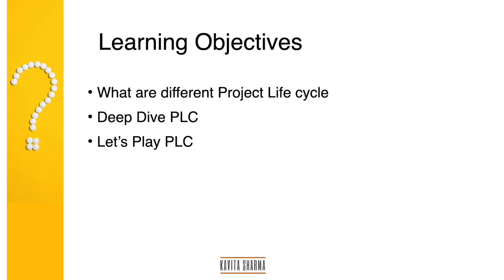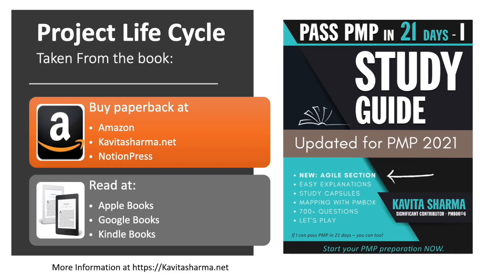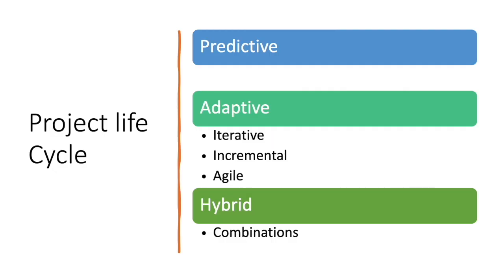All these topics are picked up from the book called PMP Study Guide. A project life cycle is the way I, as a project manager, start my project and deliver the project deliverables. There are three ways I can deliver the expected outcomes: the first one is predictive; if requirements are not clear, adoptive — which includes iterative, incremental, and agile; and then hybrid methodology.